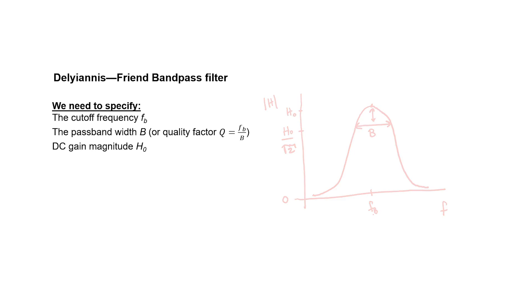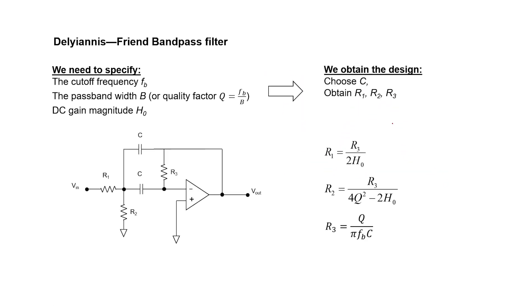After we design the filter, we should be able to obtain the design — a capacitor and 3 resistors, as you can see in the circuit. It turns out that it's very easy to design one of these Deliyannis-Friend filters. Once we specify the key parameters, we can use these three formulas to calculate the appropriate values of the resistors. We can choose whatever convenient capacitor value C that we want.